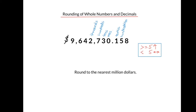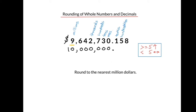Let's try another example. Let's say our number is a dollar amount and we want to round to the nearest million dollars. We locate the millions column — the digit 9 represents that place value. We'll underline the 9 and apply the rule. We look to the digit immediately to the right — 6 is greater than or equal to 5, so we bump up the 9 to a 10. Everything to the right goes to 0. The zeros to the right of the decimal can be removed, but the zeros to the left must remain. So our number rounded to the nearest million dollars is 10 million dollars.